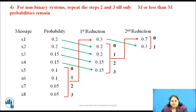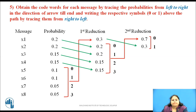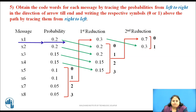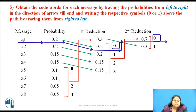Once the reduction procedure is complete, we find the codeword for all messages. To obtain the codeword, probabilities are traced from left to right and the symbols are traced from right to left along that path. Tracing the path for x1 from left to right, the symbols on the path from right to left are 0, 0 and no further symbols. So the codeword for x1 is 00.